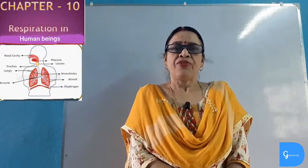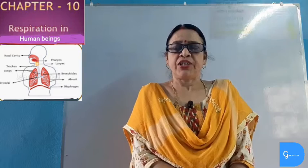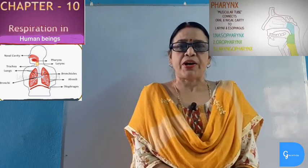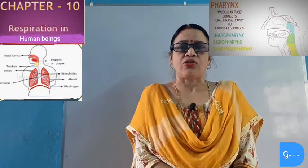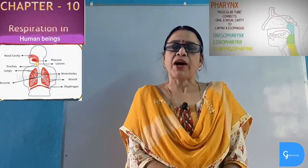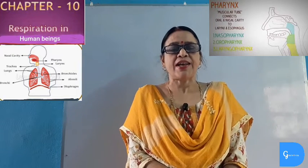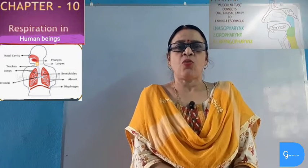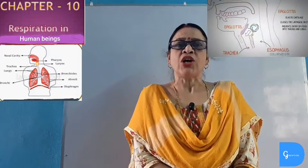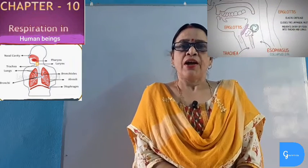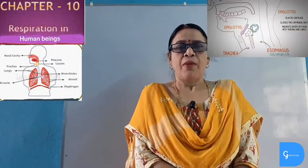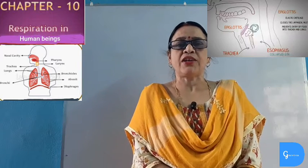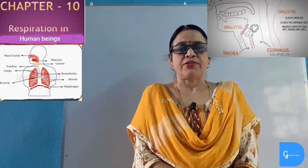Then comes the pharynx, or throat. This is a muscular structure and a spacious chamber about 5 inches long. The pharynx receives both the buccal cavity and nasal cavity and leads to both the trachea and esophagus. The opening of the trachea is known as the glottis. Normally the trachea remains open, but during swallowing of food, it is covered by a cartilaginous flap known as the epiglottis.